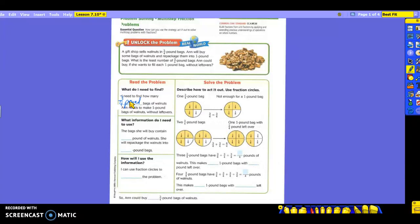So what is the information I need to use? It says here the bag she will buy contains three-fourths pound of walnuts. But she wants to repackage it into one pound. So instead of having three-fourths pound of bags, she wants to put them in one pound bags. She wants hers to be larger.